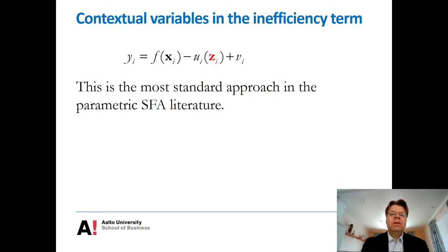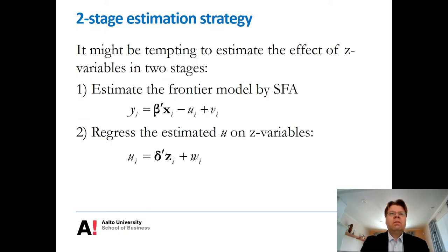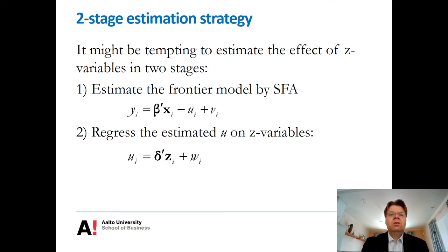From the practical point of view, it might be tempting to apply the following kind of two-stage estimation strategy, and this is actually what has been done in the past in several applications. First, you estimate the SFA model and estimate the inefficiency terms. Then, given the inefficiency estimates of the first stage — or perhaps translated to efficiency scores — in the second stage you apply regression analysis to estimate the impact of Z variables on the inefficiency U. The estimated U becomes the dependent variable and you regress it on the Z variables.